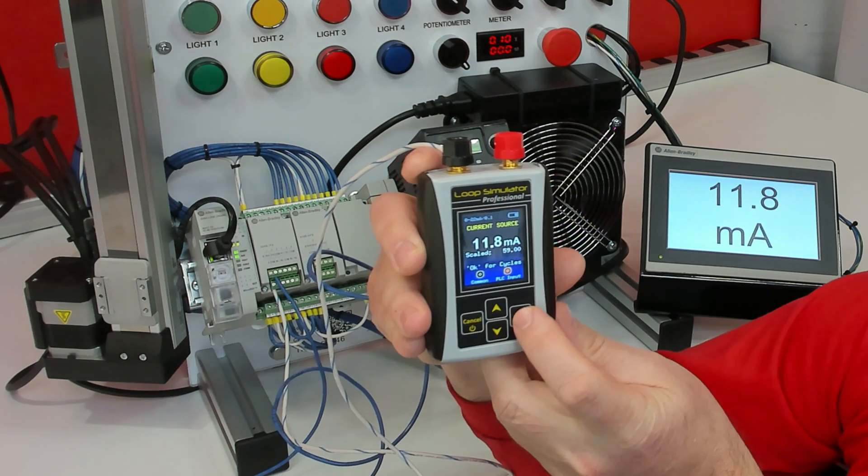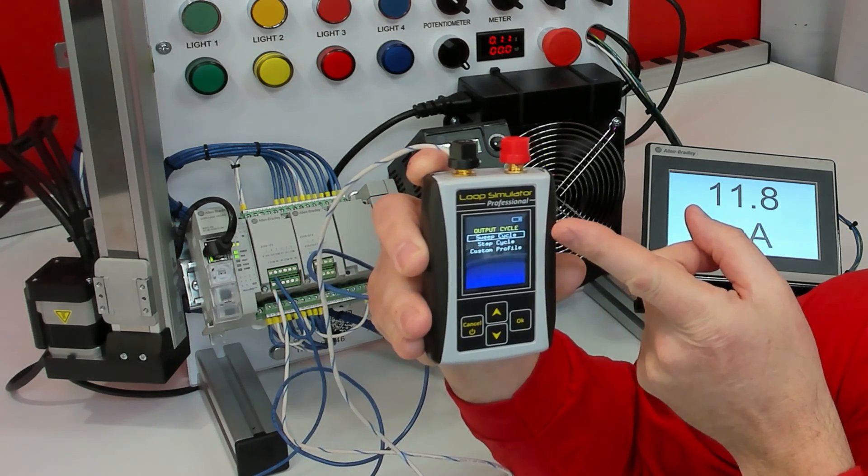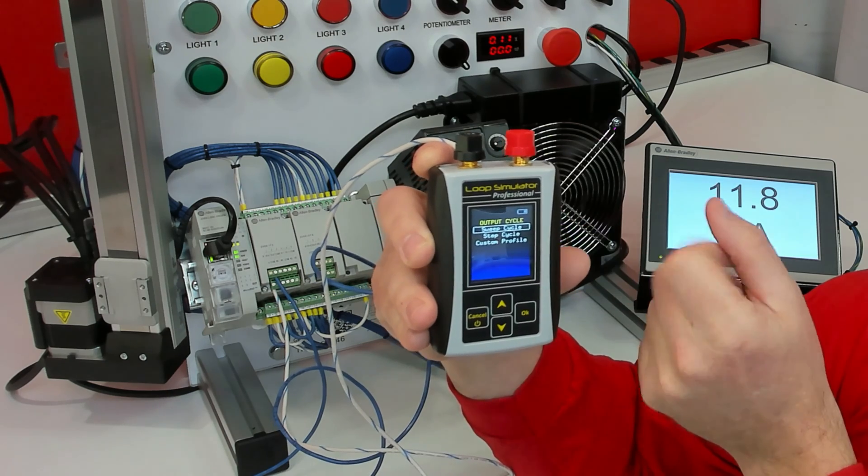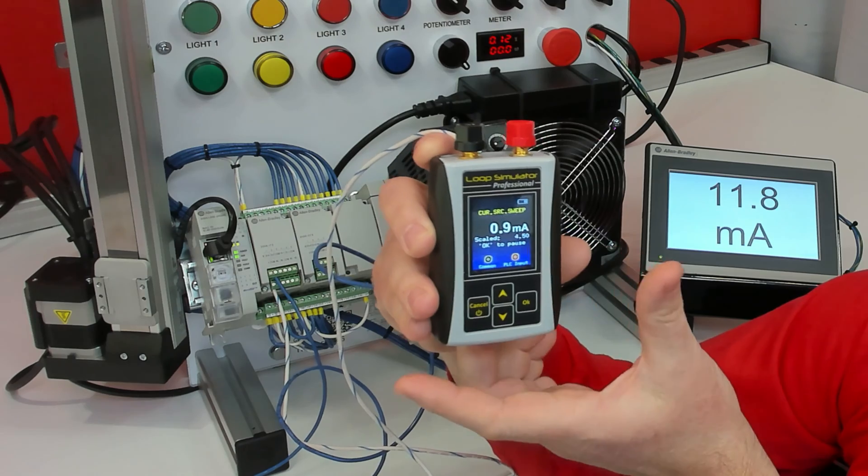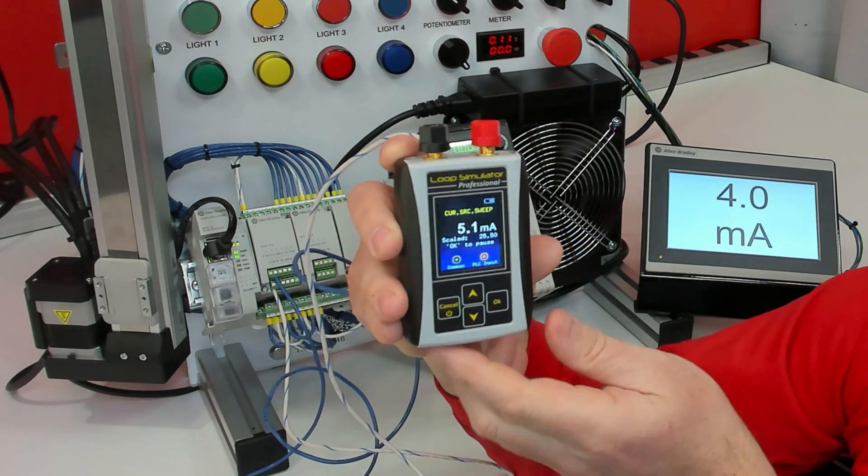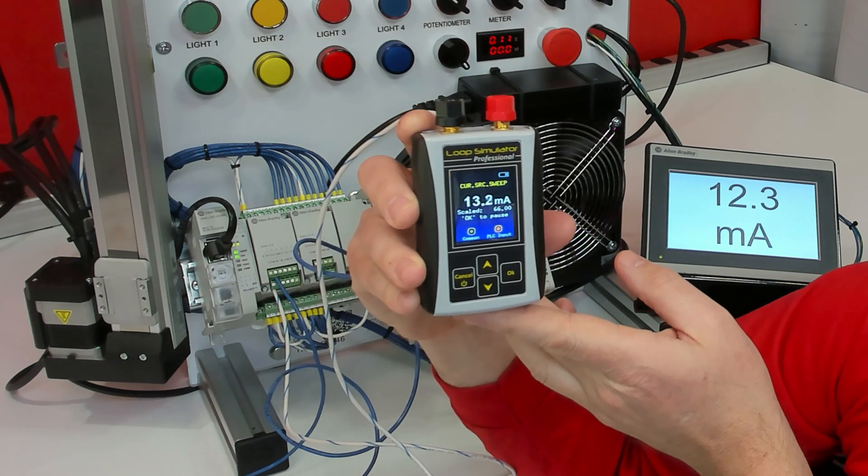And while you have it on this screen, you can click the OK button, and that brings up another menu of sweep cycle, step cycle, and custom profile. I'm just going to go into the sweep cycle and hit the run button. And now it's going to automatically run up and down based on the parameters that you set.